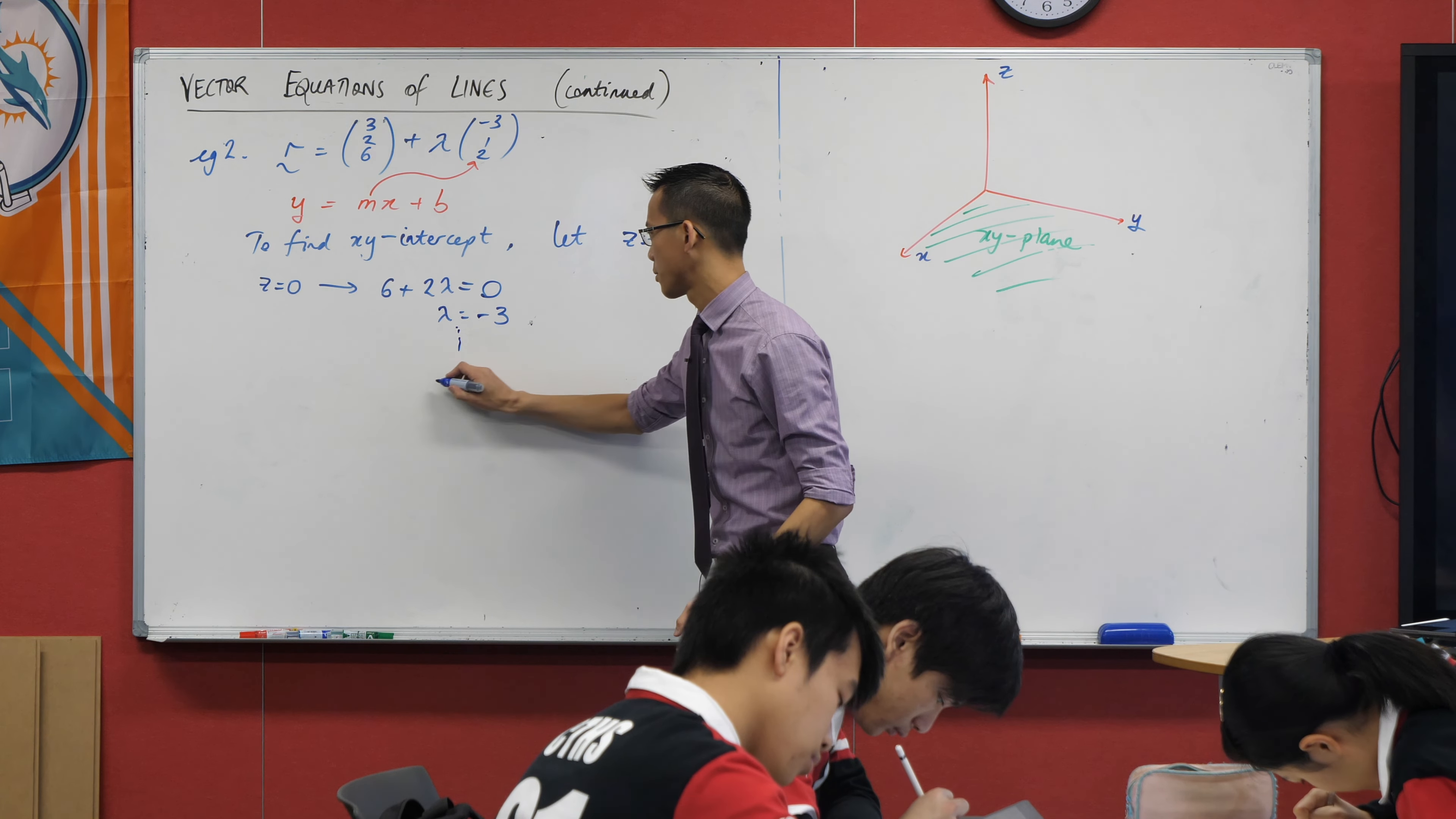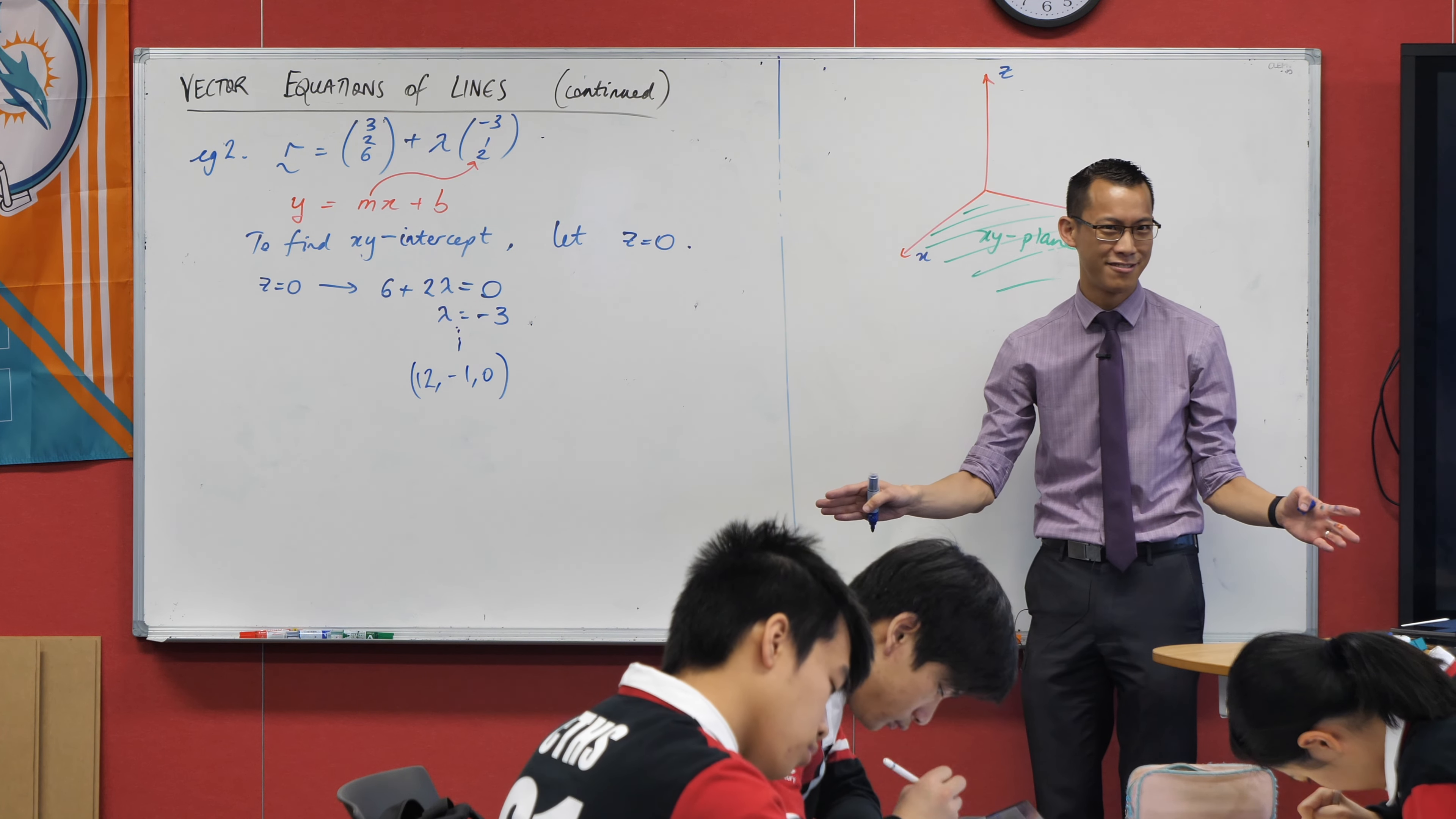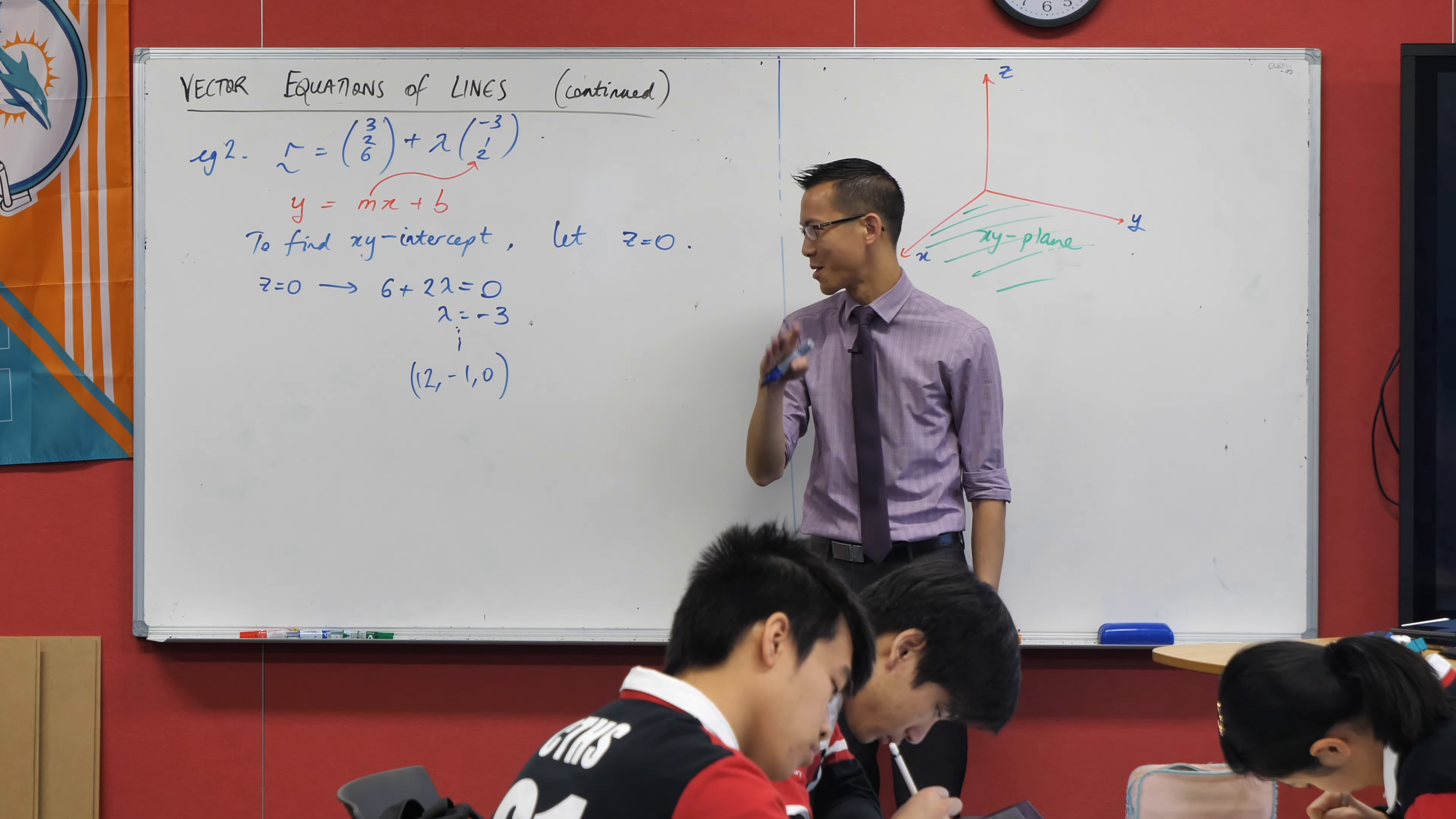So when you go ahead and do that, what do you get? If z equals 0, that gives you, have a look, I'm going to try and find an appropriate lambda here. And here's my values that correspond to z. So I'm going to get 6 plus 2 lambda. That's going to equal 0 because that's what I've set. And from here, I can say, well, therefore, lambda equals negative 3. I'm so happy at this point that you guys know what to do. You can take that value of lambda and you're going to pop it into x, you're going to pop it into y, and you'll get, well, what did we get? 12, negative 1, 0?